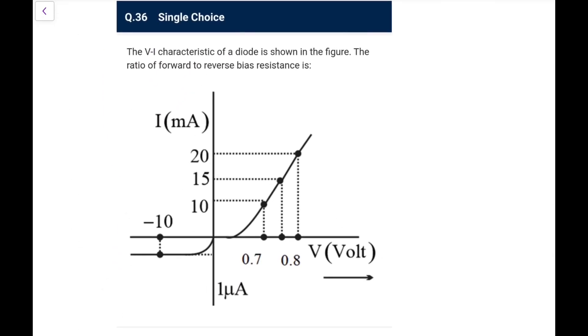Next, on finding the resistance, we typically define the resistance here as change in voltage upon change in current - this is the dynamic resistance or AC resistance we define, not the DC one V by I here. So ratio of forward to reverse. In forward, let us see when voltage change from 0.7 to 0.8, the current changes from 10 milliampere. So in the forward bias, the resistance, this is 0.1 volt and the change is going to be 10 milliampere, that is 10 into 10 to the power minus 3. That comes out as 10 ohm.